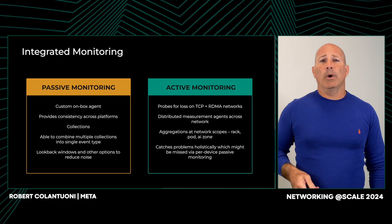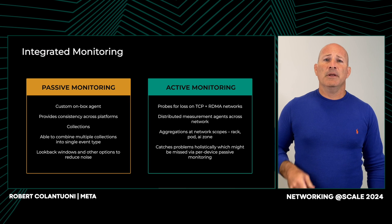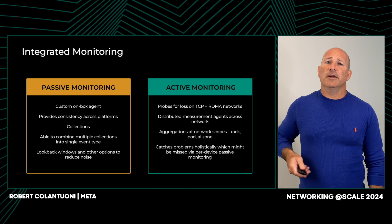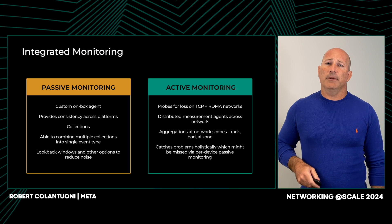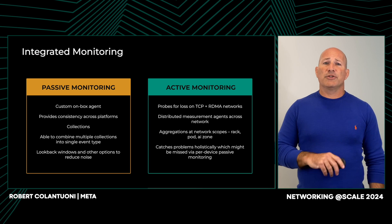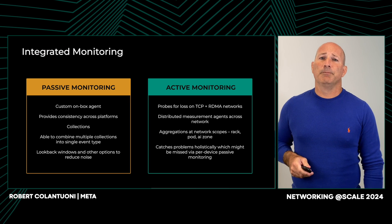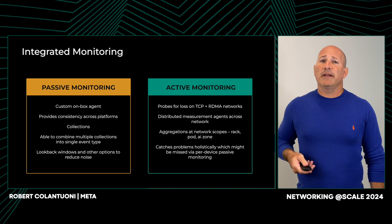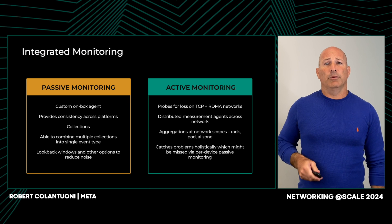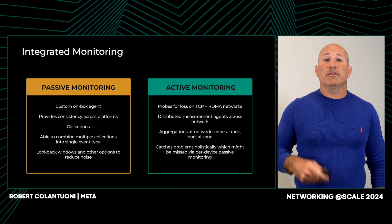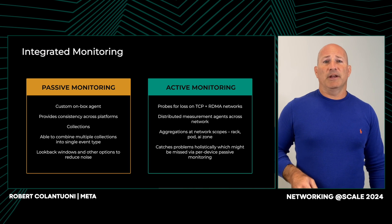Active monitoring plays a crucial role where passive methods fall short, particularly when devices fail to self-report issues. This method provides a constant and clear baseline for packet loss and latency, essential for ensuring network integrity. It involves using probes to measure loss in TCP and RDMA networks via distributed measurement agents across the fleet. These agents perform failure triangulation and provide aggregated data at various network scopes such as rack, pod, and AI zone levels. Ultimately, active monitoring offers a holistic view of network health, catching problems that might be overlooked by per-device passive monitoring.